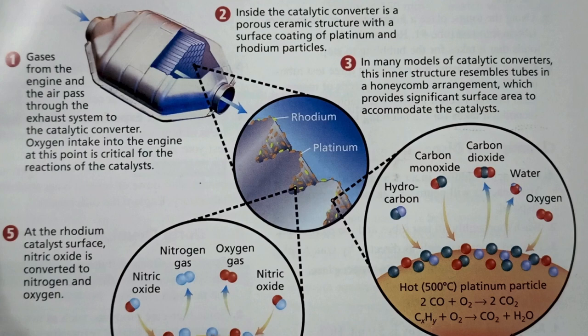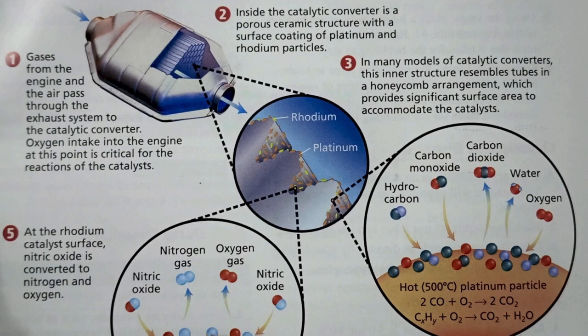Inside the catalytic converter is a porous structure with a surface coating of platinum and rhodium particles. As you can see here, the catalytic converter has a structure just like a honeycomb.